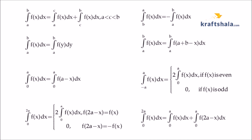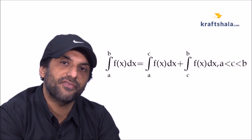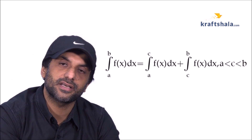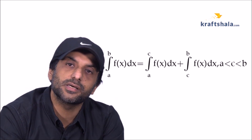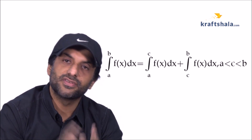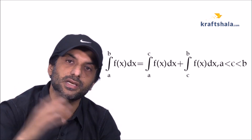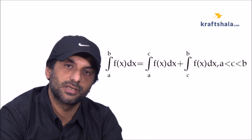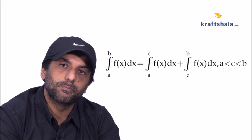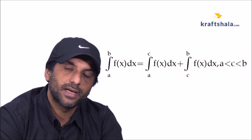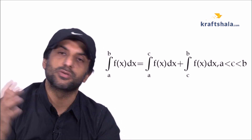Students, you can see the list of properties of definite integration and I will take them one by one. The very first property says the integral from a to b of f(x) dx equals the integral from a to c of f(x) dx plus the integral from c to b of f(x) dx, where c should be an interior point of the interval [a, b]. This property allows us to break the limit in between, which is especially useful in mod functions and many other definite integration questions.